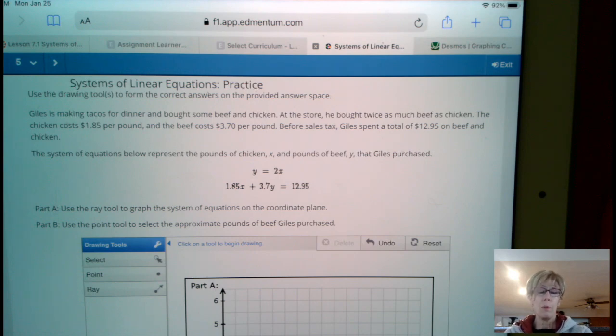The system of equations below represents the pounds of chicken, X, and the pounds of beef, Y, that Gilles purchased. Part A, use the ray tool to graph the system of equations on the coordinate plane.